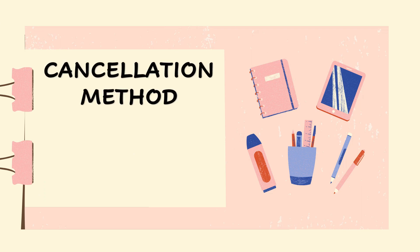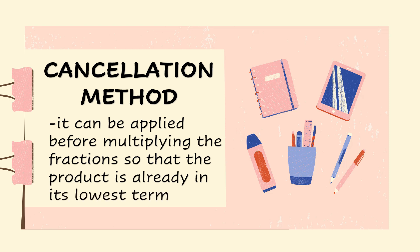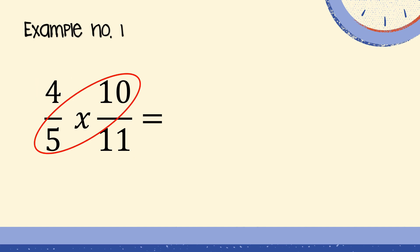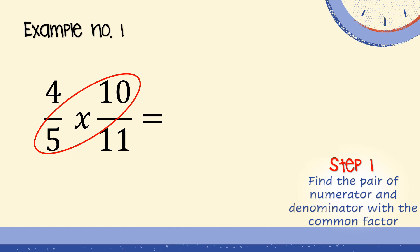We can also use the cancellation method before multiplying the fractions so that the product is already in its lowest term. We can apply cancellation if there is a common factor in the numerator and the denominator. For example, four-fifths times ten-eleventh. In the cancellation method, we need to find the pair of numerator and denominator to cancel — it can be four and five, ten and eleven, four and eleven, or five and ten. In this case, the pair with a common factor is five and ten, and their common factor is five.